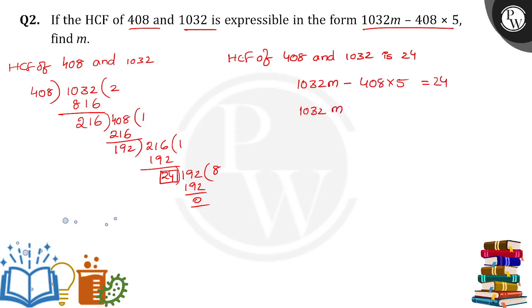Then 1032m minus 2040 equals 24. 1032m equals 24 plus 2040, which gives 1032m equals 2064.